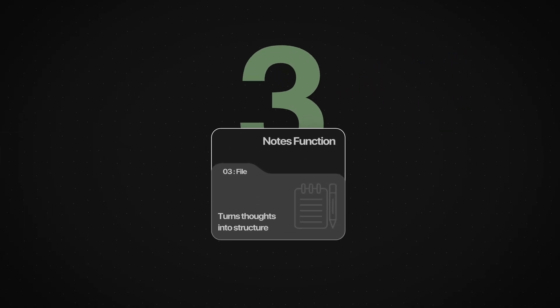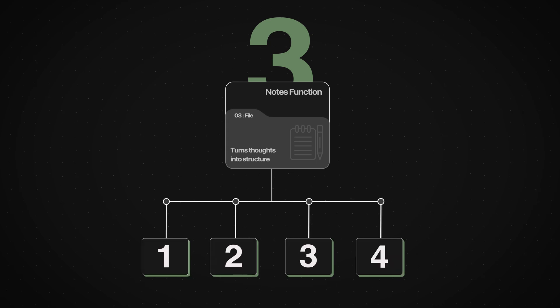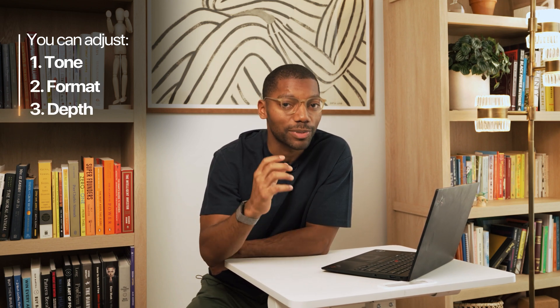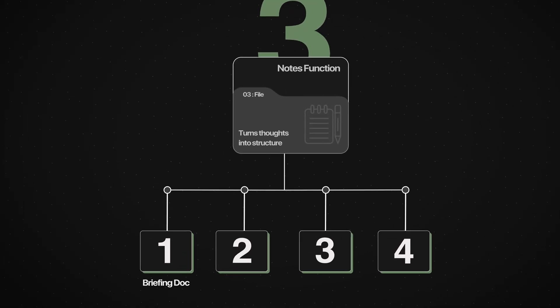This last feature has saved me the most time of any AI tool, and it's a bonus feature because it has four formats that work in one. The first format is all about condensing all of that information — all 25 million possible words — into very distilled and understandable summaries. You can focus on tone, format, and depth, and really curate summaries specifically for presentations to your team, your company, or investors. This format is called the Briefing Doc.